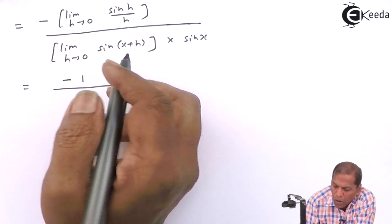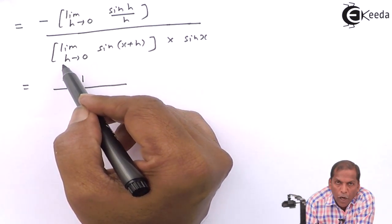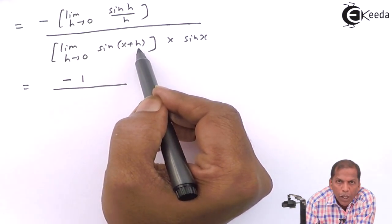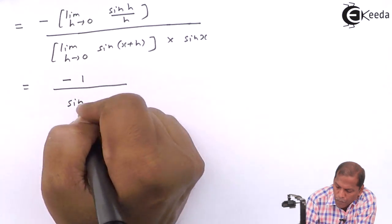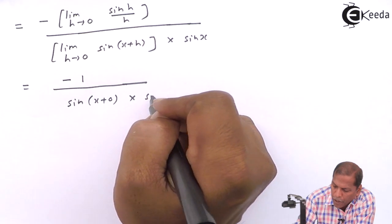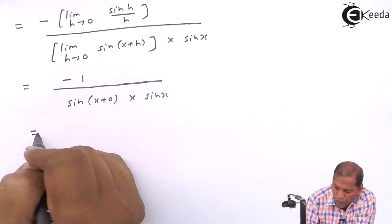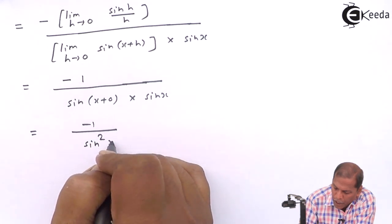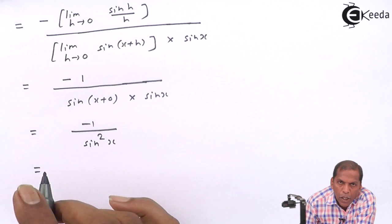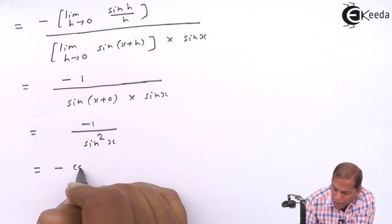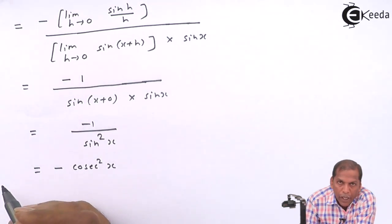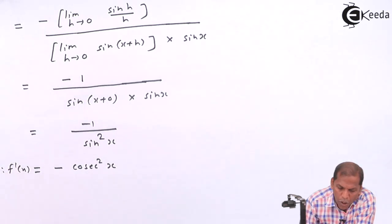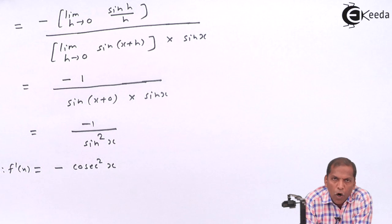Now, for sin(X+H), whenever H we substitute 0, we get sin(X+0), that is sin(X) only. The remaining term we write into sin(X) as it is. So finally, we get minus 1 upon sin(X) into sin(X), that is sin²(X). So 1 upon sin²(X) gives cosec²(X). So finally we get minus cosec²(X). In this way we proved the derivative of cot(x) is minus cosec²(x). This is the required proof for the given question. Thank you.